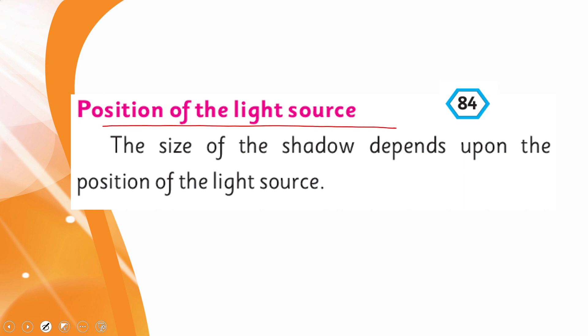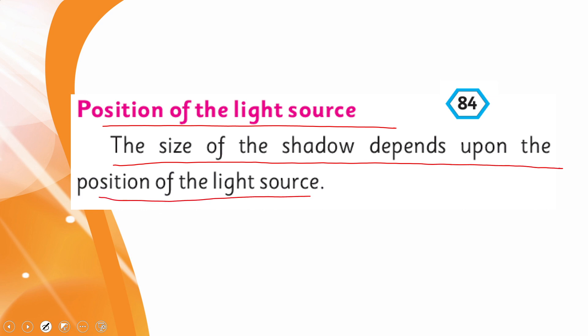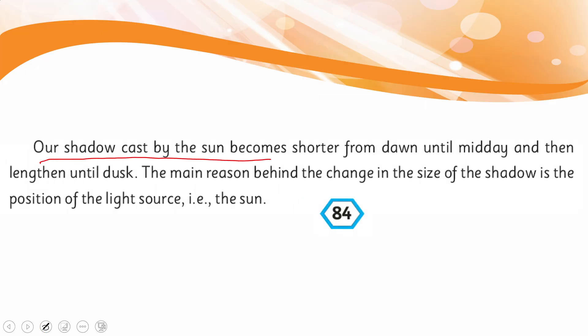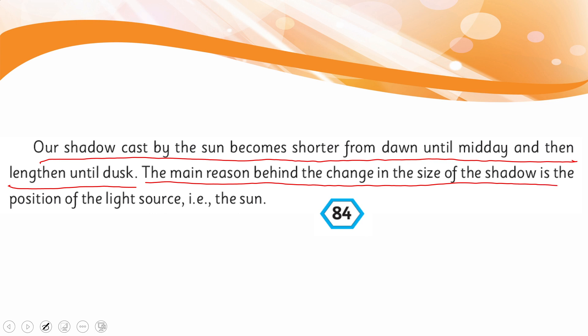The size of the shadow also depends upon the position of the light source — whether it is upward, downward, or at another angle. Shadows cast by the sun are shorter from dawn until midday and then lengthen until dusk. The main reason behind the change in size of the shadow is the position of the light source, that is, the sun. As the sun moves, the shadows' positioning keeps changing.